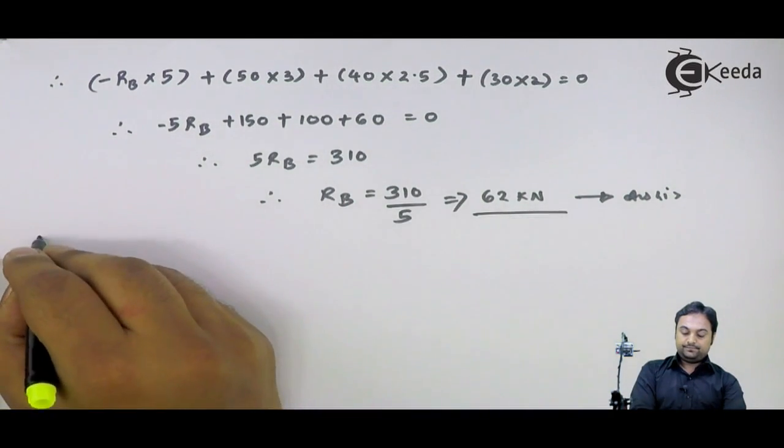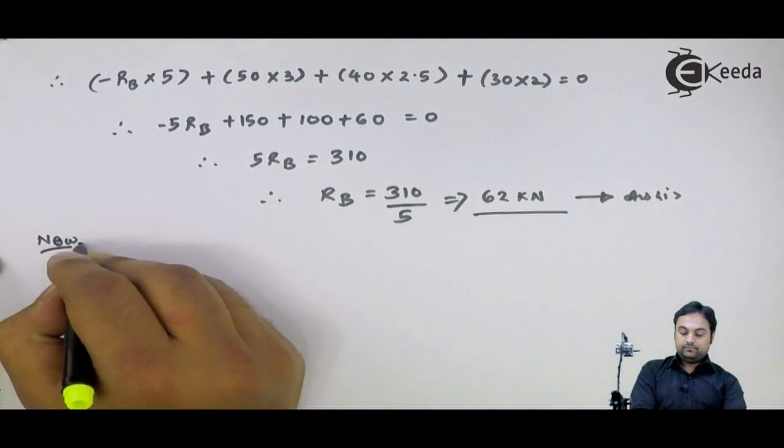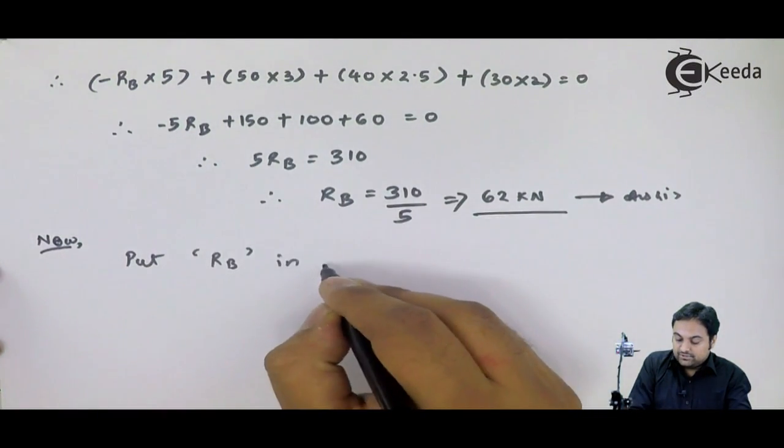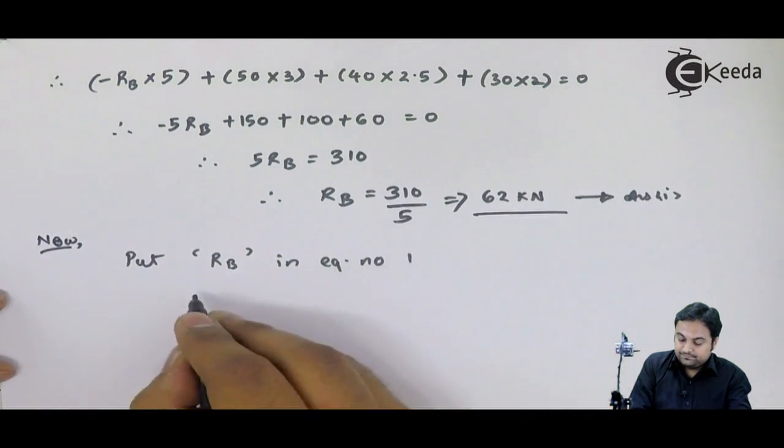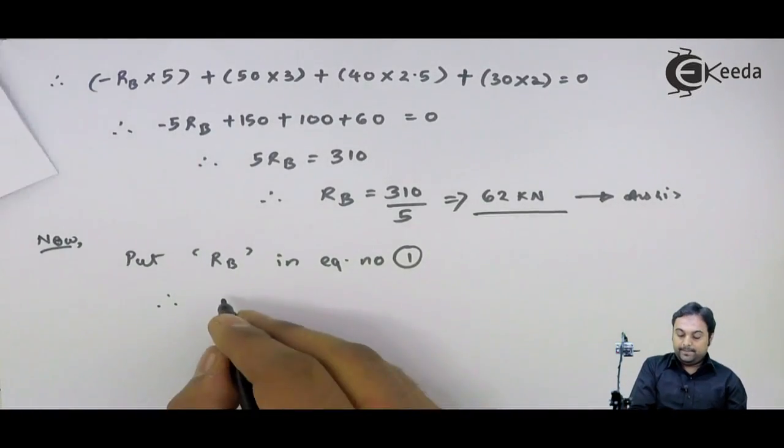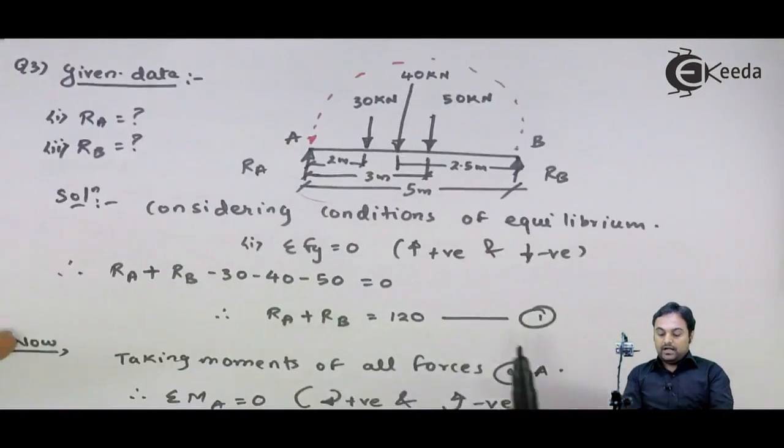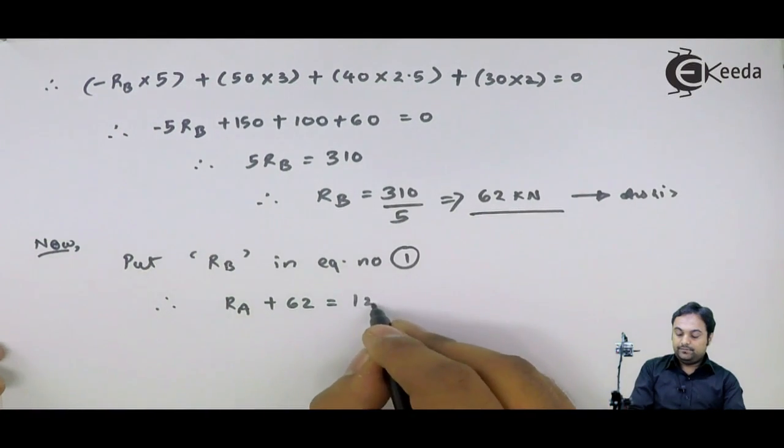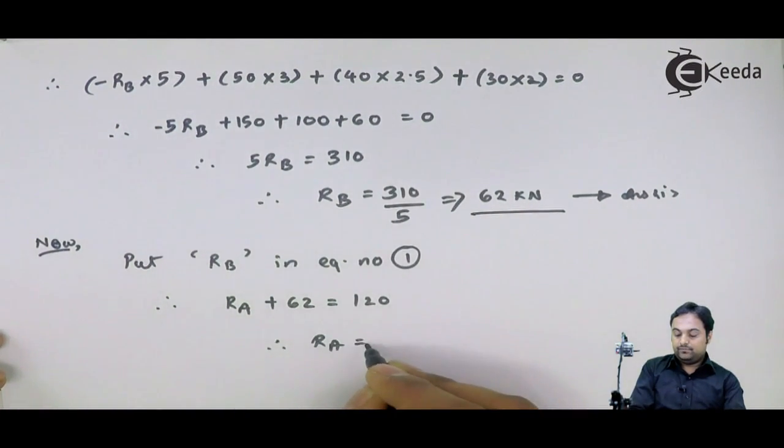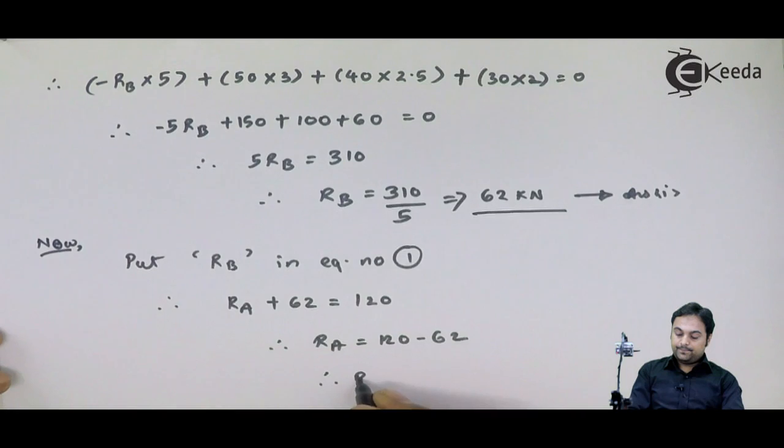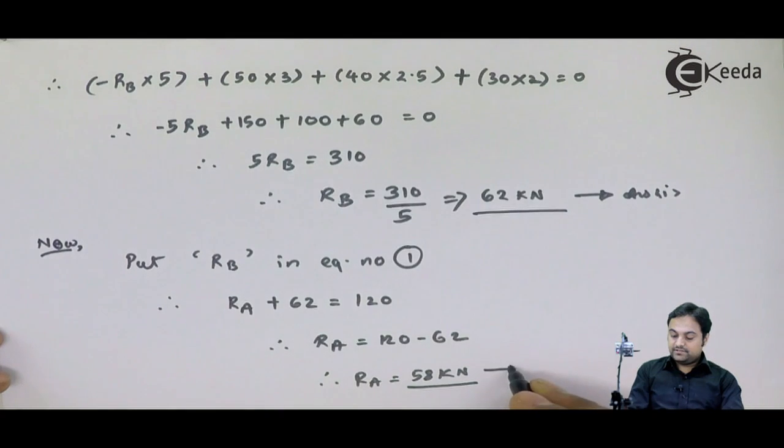Next, I will put RB in equation number 1. Therefore, RA plus RB is 62, so RA plus 62 equals 120. Hence RA equals 120 minus 62. That value comes out to be 58 kilonewtons. This is my second answer.